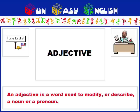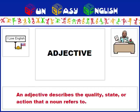An adjective is a word used to modify or describe a noun or a pronoun. An adjective describes the quality, state, or action that a noun refers to.